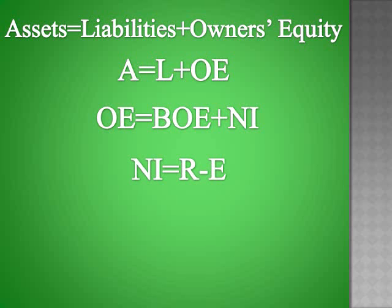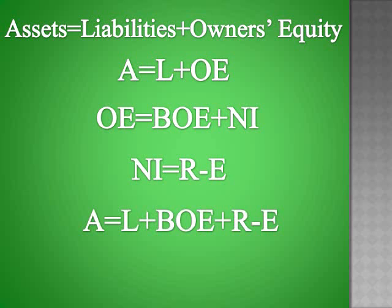Net income equals revenues minus expenses. So when you put all this together, you have the expanded accounting equation: assets equal liabilities plus beginning owner's equity plus revenue minus expenses.